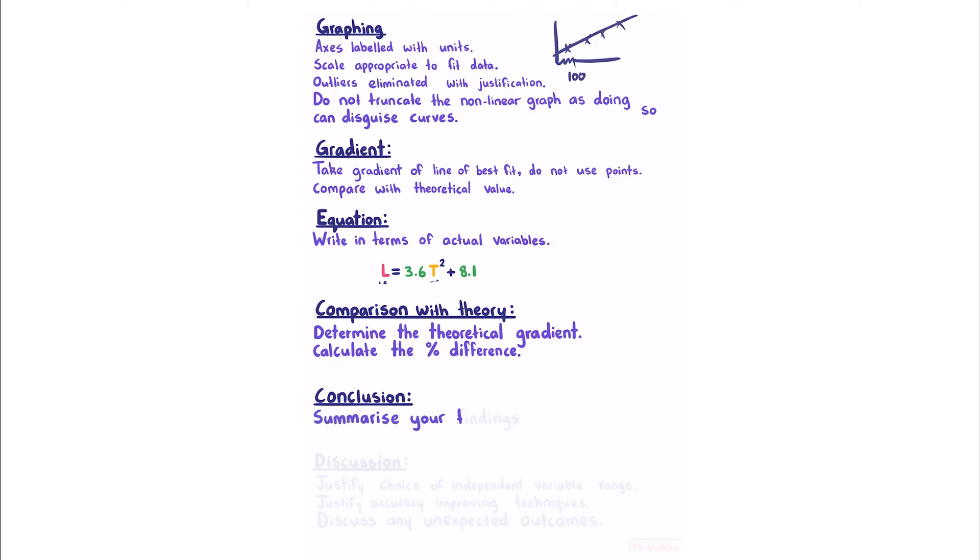The conclusion is where you summarize your findings, and in your discussion, is where you'll take your grade from a merit to an excellence, by doing things such as justifying the choice of independent variable range. So for example, if you were dropping something, what made you choose the lowest height, and what made you choose the highest height. For example, your lowest height might be 50 centimeters, because anything lower was too quick for you to accurately time. You should justify your accuracy improving techniques, including what would happen if you didn't take them into account. You should also discuss any unexpected outcomes, such as outliers, and what might have caused them.